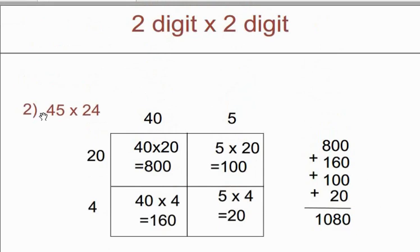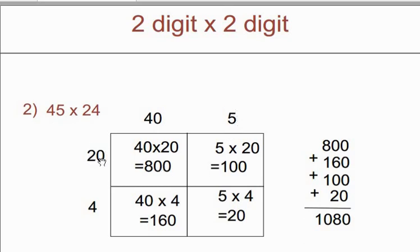Let's see another example of 2-digit by 2-digit number: 45 multiply by 24. So for 45 we have to write 40 plus 5, and for 24 we will write 20 plus 4. Here also we need 2 boxes wide and 2 boxes high. Write here 40 plus 5, and here 20 plus 4. For this particular box take 40 and 20 — you will get 800. For this particular box take 5 from here and 20 from here — you will get 100.